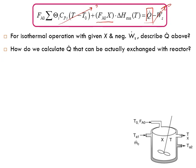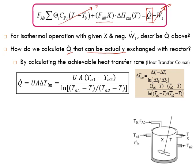How do we calculate Q̇ that can actually be exchanged with the reactor? In reality, the amount of heat exchanged depends on your design. From heat transfer, we calculate Q̇ = U * A * ΔT_lm (log mean temperature difference). For the CSTR this is slightly easier because there is one uniform temperature inside the reactor, and two temperatures TA1 and TA2 for the coolant in the jacket.